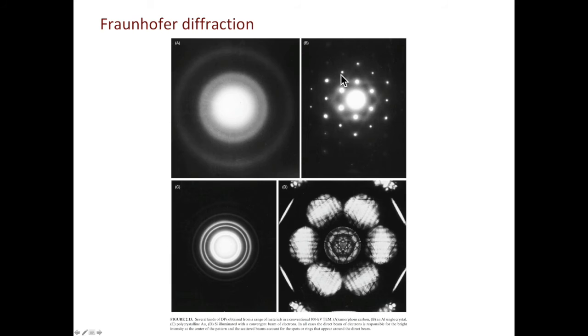In the second example, you see spots. This tells you the area you selected for diffraction is single crystalline. In the third example, you see very sharp rings. This tells you the sample is nano-crystalline.